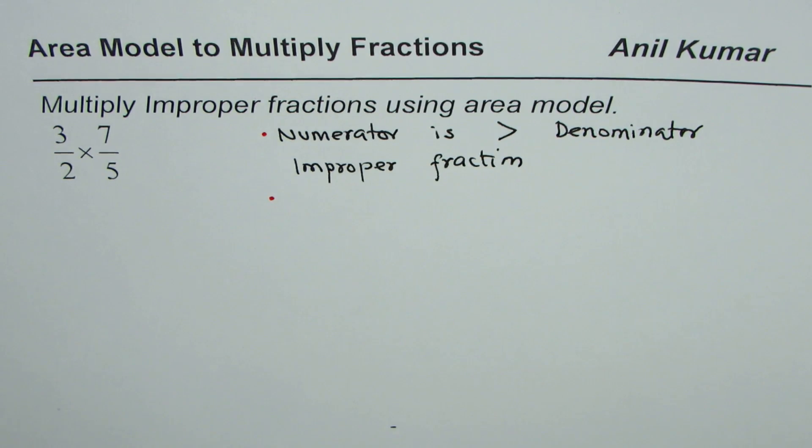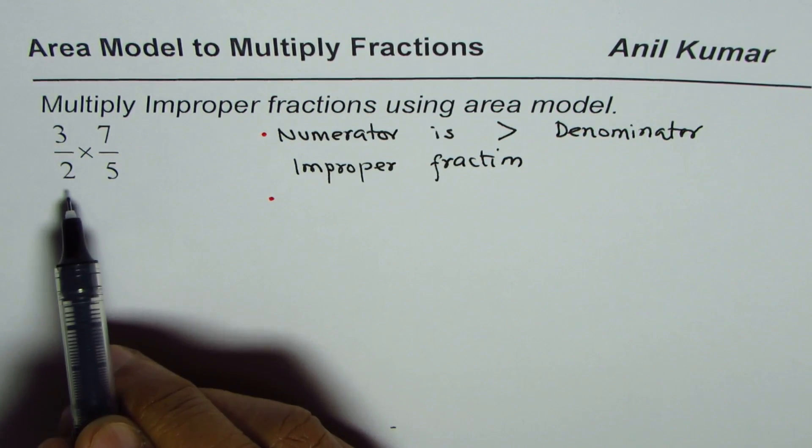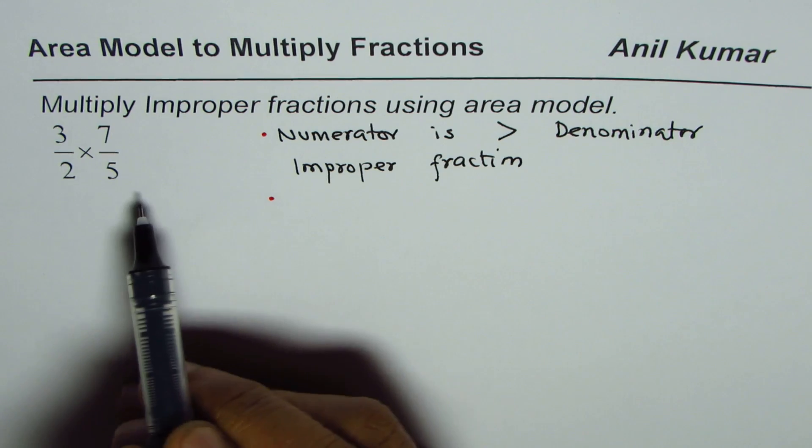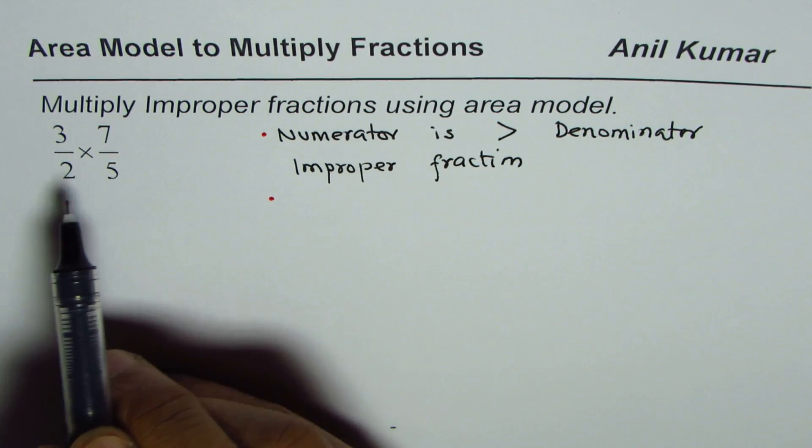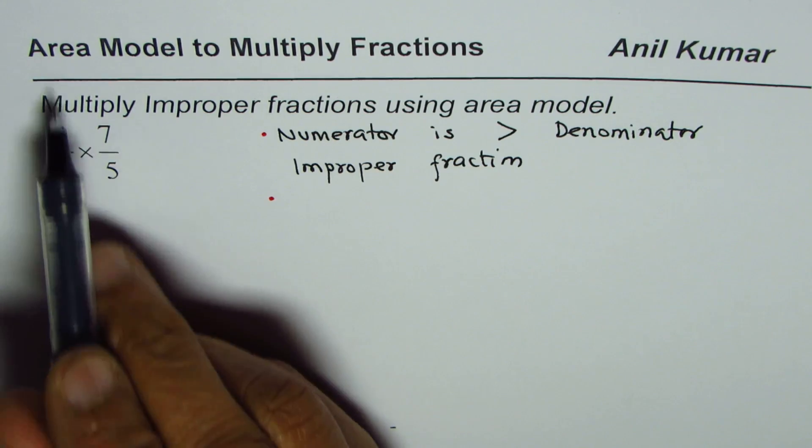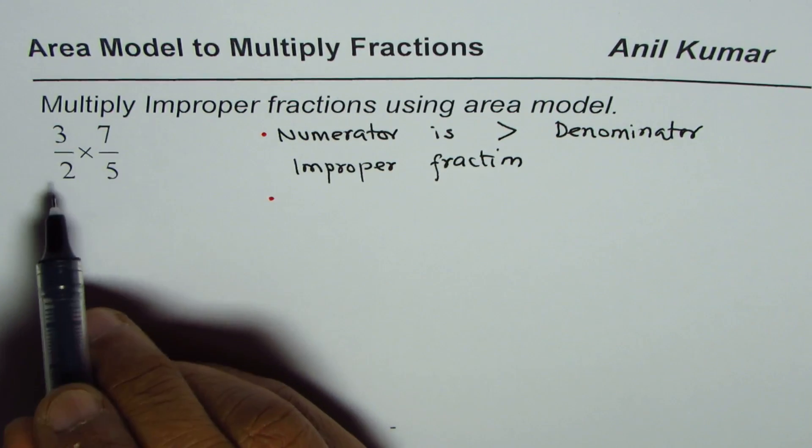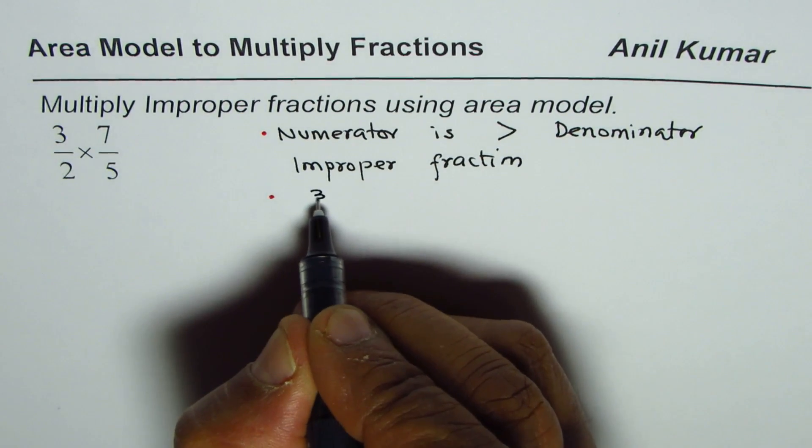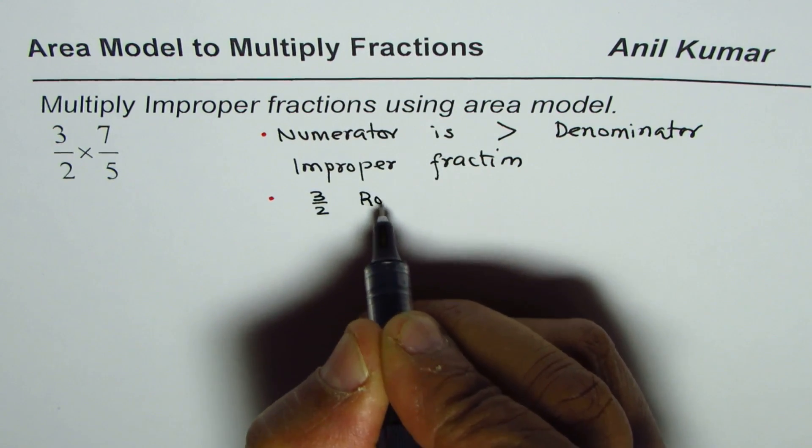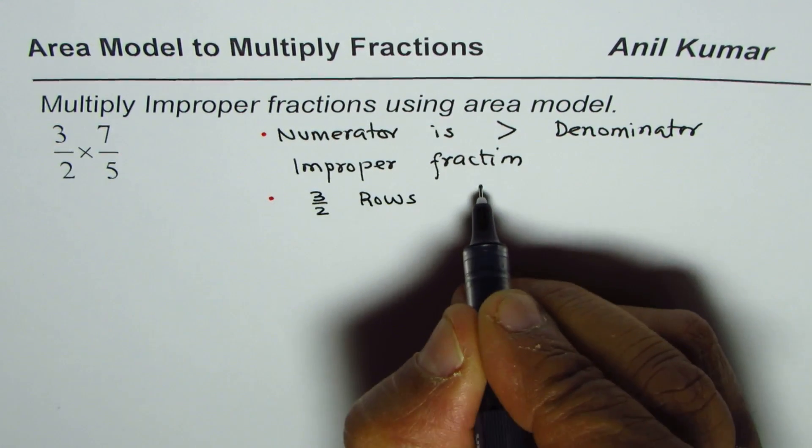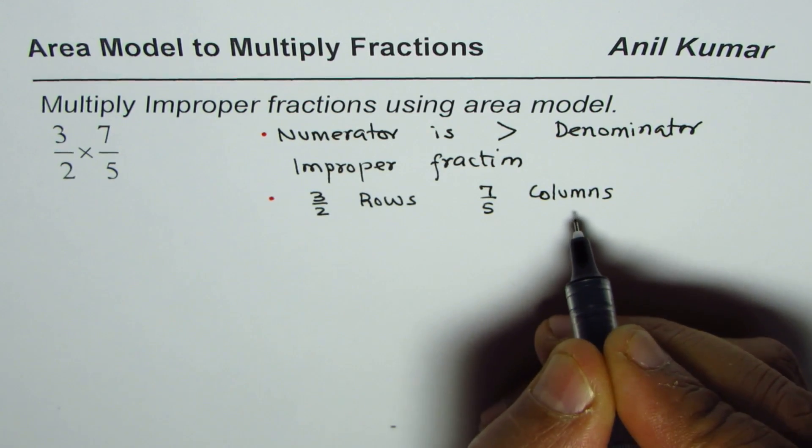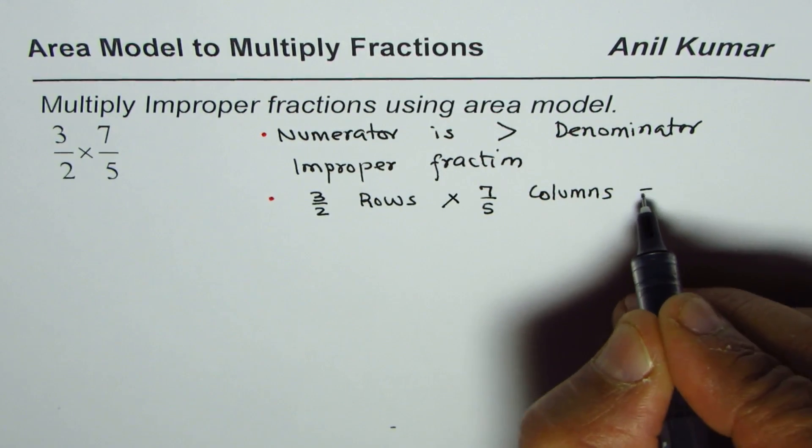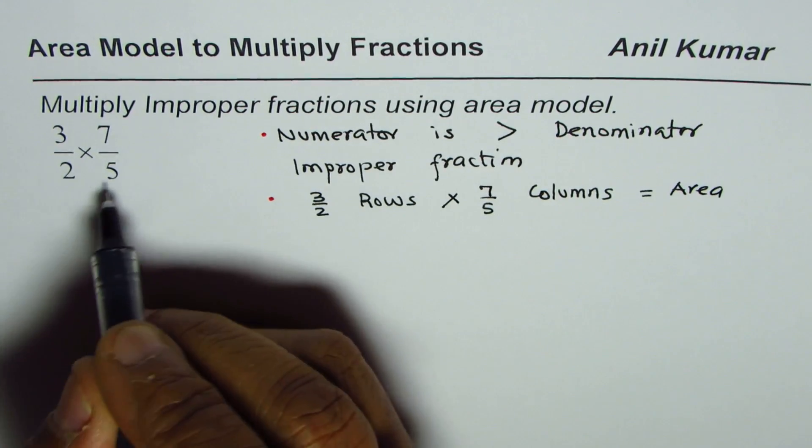Now what else do you notice? We can assign one of the fractions as rows, the other one as columns, or we can say length and width. When you multiply rows and columns or when you multiply length and width, you get area. So we get an area model. What we will do here is treat 3 out of 2 as rows and 7 out of 5 as columns. When you multiply them you get the area.